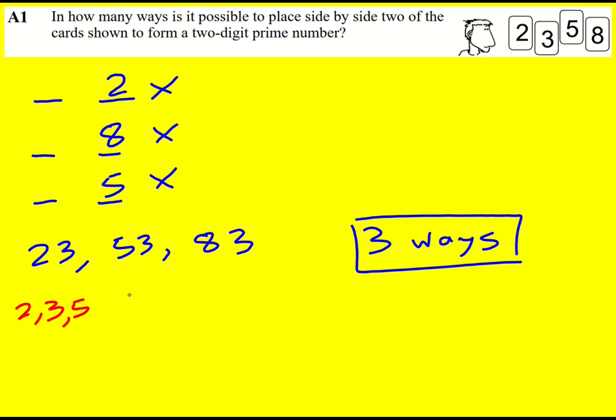For 53 we'll do the same sort of thing: 2, 3, that doesn't work, 5, 7, and actually that's it because the next one would be 11, which is way too much. So we're okay because 49 is divisible by 7, so 53 is not. For 83,